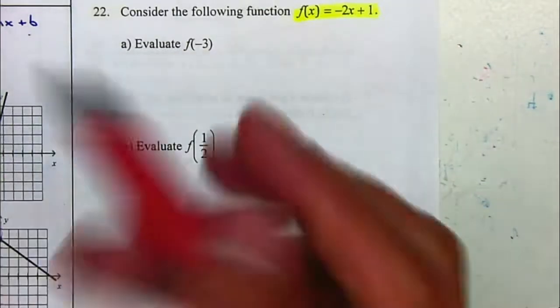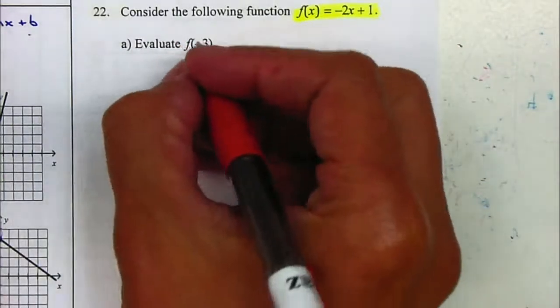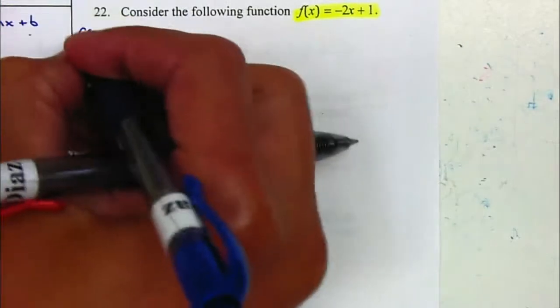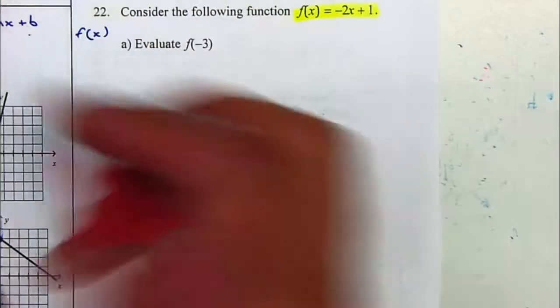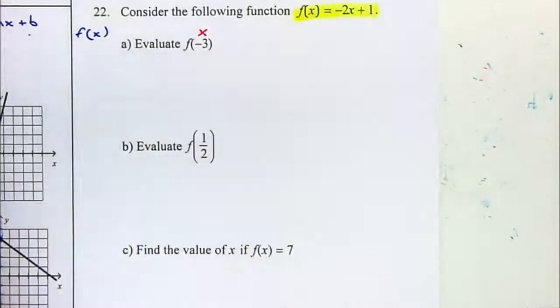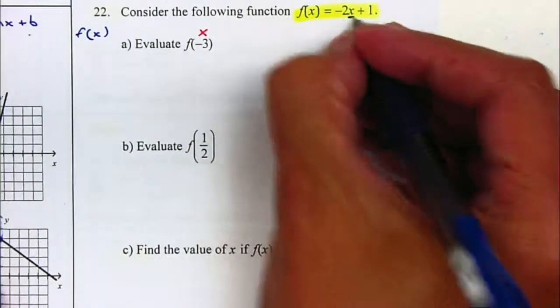Remember that whenever it says f of negative 3, we write down f of x. So the x value is negative 3. The only thing you have to do is plug in a negative 3 instead of the x.